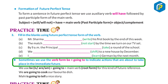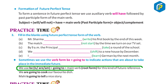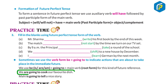Sometimes we use the verb form 'be going to' to indicate actions that are about to take place in the immediate future. We use am/is/are + going to + main verb (root form). Examples: We are going to cook our favorite dish. Mahi is going to tell a nice story.